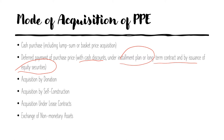Other modes include acquiring assets by means of donation — donors can be existing shareholders or a philanthropist who simply wants to donate to the corporation. We'll also cover self-construction, where you construct your own asset; acquisition under lease contracts, where you are the lessee; and lastly, exchange of non-monetary assets, where the non-monetary assets involved are long-term assets or PPE.